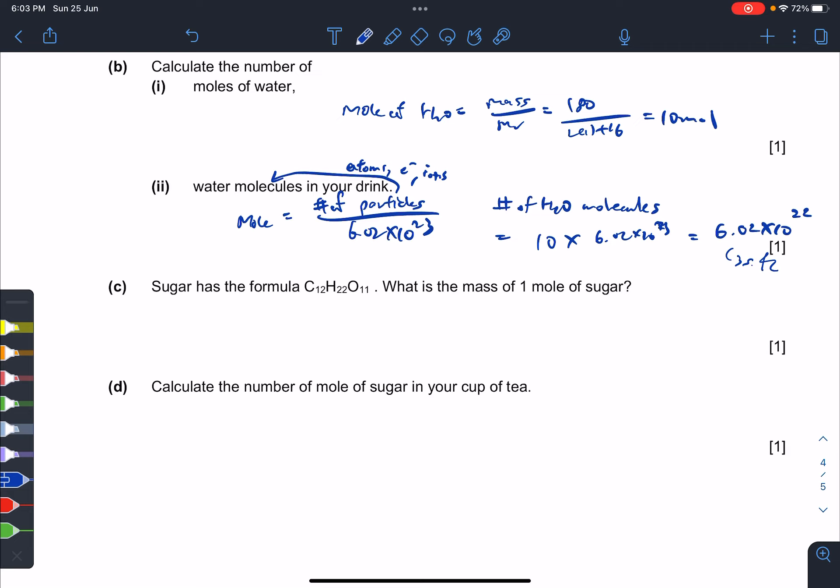The formula is mole equals mass over Mr, so mass equals mole, which is 1, times Mr. In this case, it's 12 times 12 plus 22 times 1 plus 11 times 16. Calculator says 12 times 12 plus 22 plus 11 times 16 equals 342 grams.